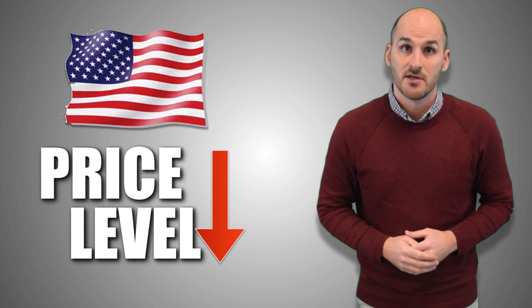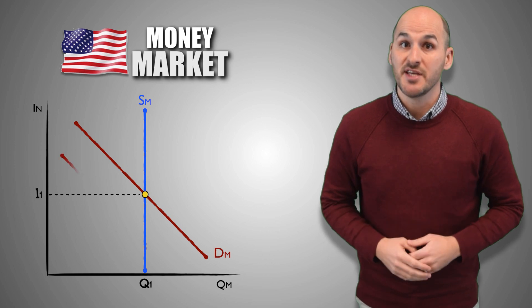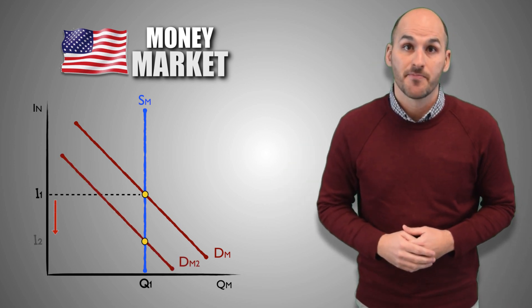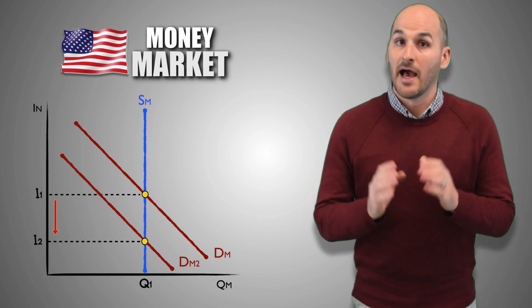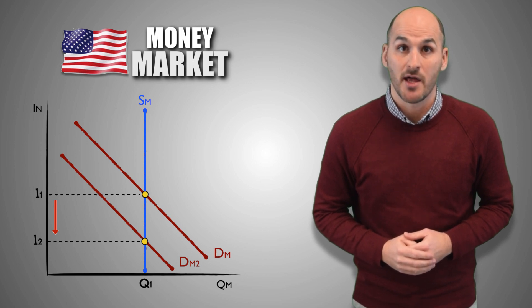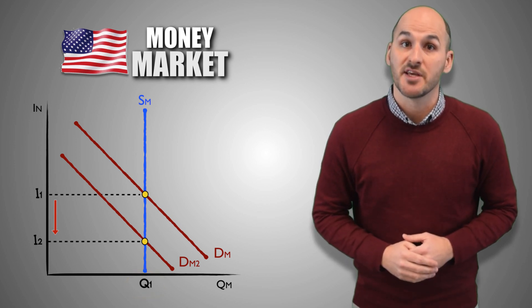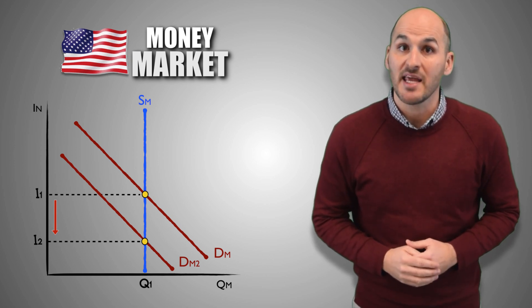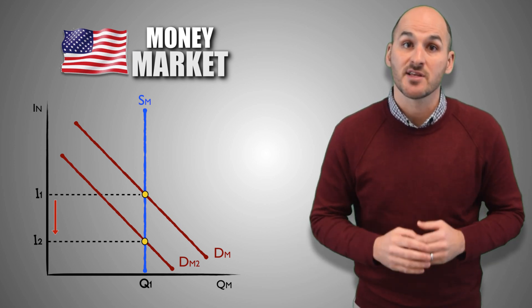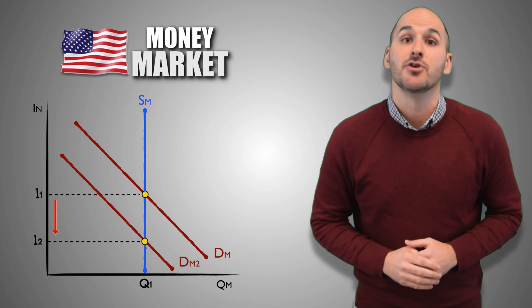Finally, suppose the United States economy experiences deflation as product prices decrease. Now that goods and services are less expensive, consumers simply don't need as much money to buy them, leading to a decrease in money demand. A decrease in the demand for money causes the nominal interest rate to decrease. Because the Federal Reserve controls the money supply, the quantity supplied does not change. This lower nominal interest rate means borrowing is less expensive, so firms increase their investment spending, causing aggregate demand to increase.